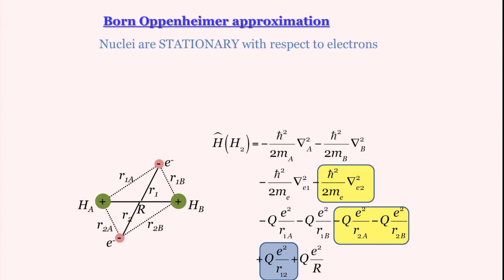Now the first thing that we need to do is use some kind of approximation. The approximation that is used here is Born-Oppenheimer approximation which in very simple terms says that when we talk about electrons we can assume that the nuclei are stationary.